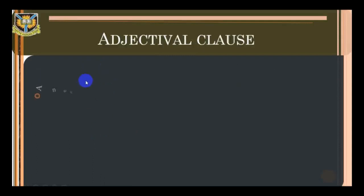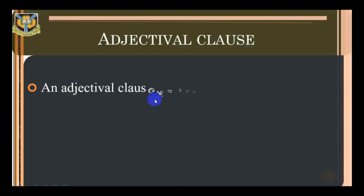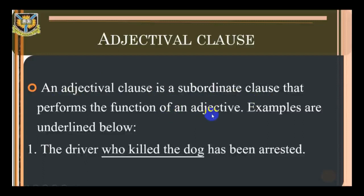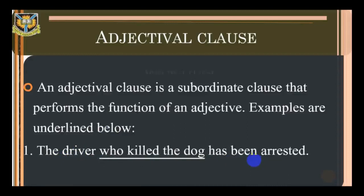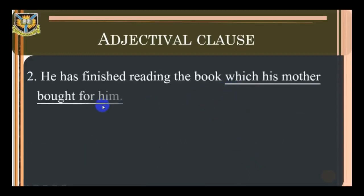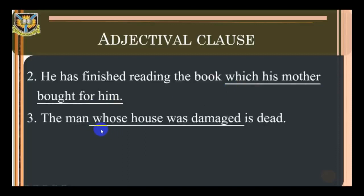Adjectival or relative clause: an adjectival clause is a subordinate clause that performs the function of an adjective. Examples: 'The driver who killed the dog has been arrested.' 'He has finished reading the book which his mother bought for him.' 'The man whose house was damaged is dead.'